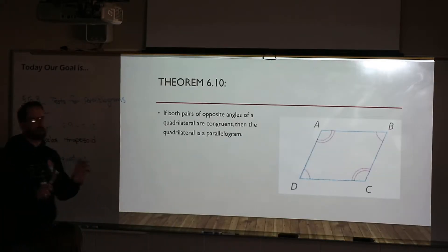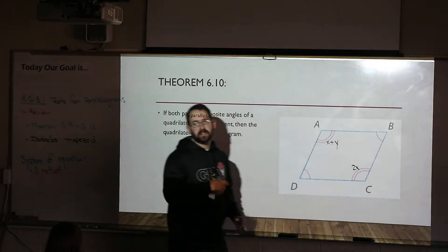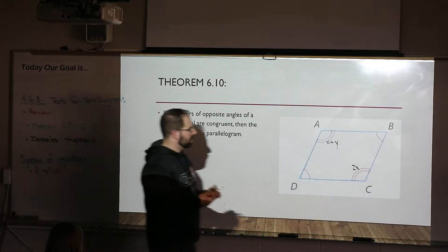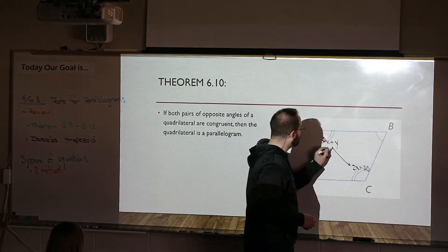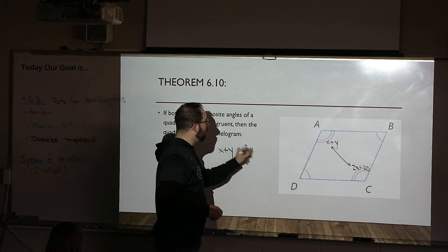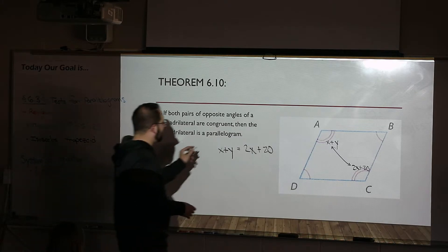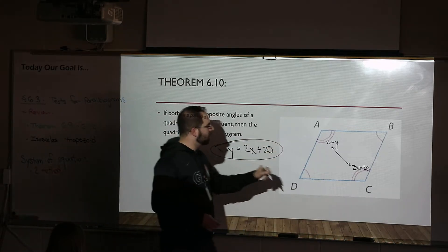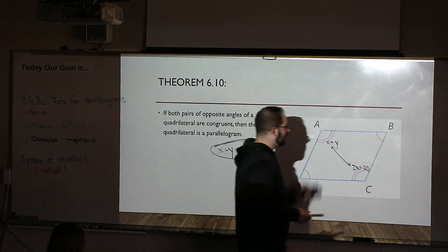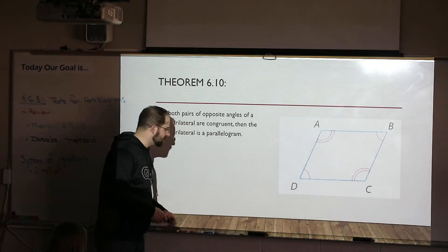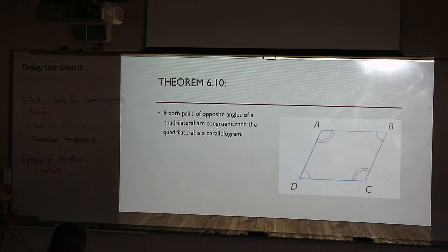Now let's talk about systems. How systems are going to apply is they'll throw different things in. For instance, they could throw something like this — this is a system. The hard part about doing a system is recognizing when you have one and when you don't. When I set these two angles equal to each other, there are two variables in that equation. There's no way to just solve for X or Y — they don't cancel out. Does everyone understand 6-10?